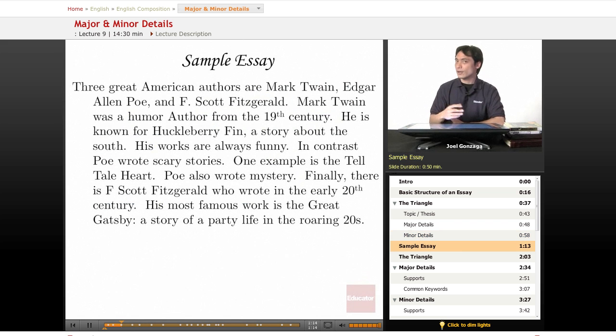Let's read a sample essay, and then we'll go backwards and figure out what's the topic and what are the major details. So, three great American authors are Mark Twain, Edgar Allan Poe, and F. Scott Fitzgerald. All right, why did I highlight those three things? Well, it's the very first one, and I got the number three there. That's giving me a big hint as to what the topic is.